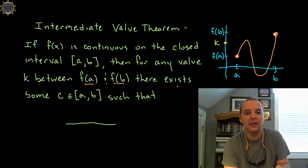Alright, then what does it say? Then it says there exists some value c. Now notice that c is in the interval [a,b]. c is an x value, right?